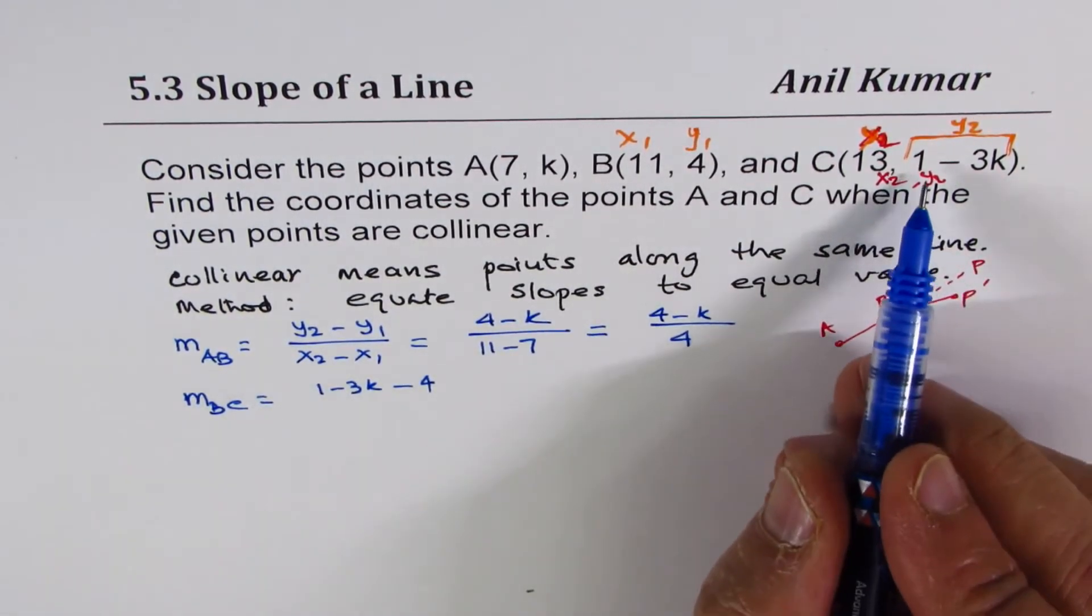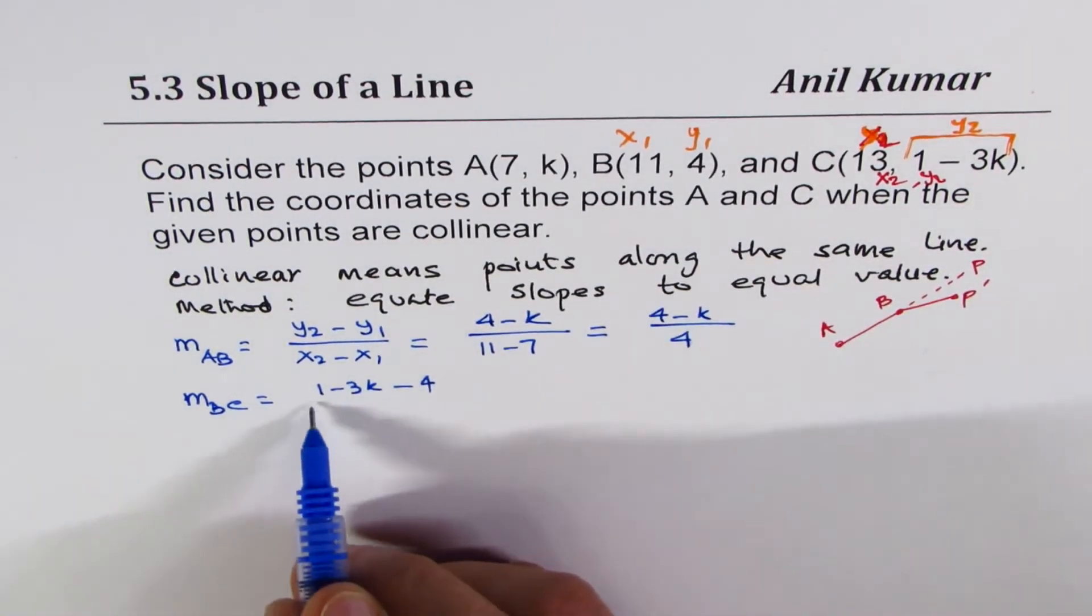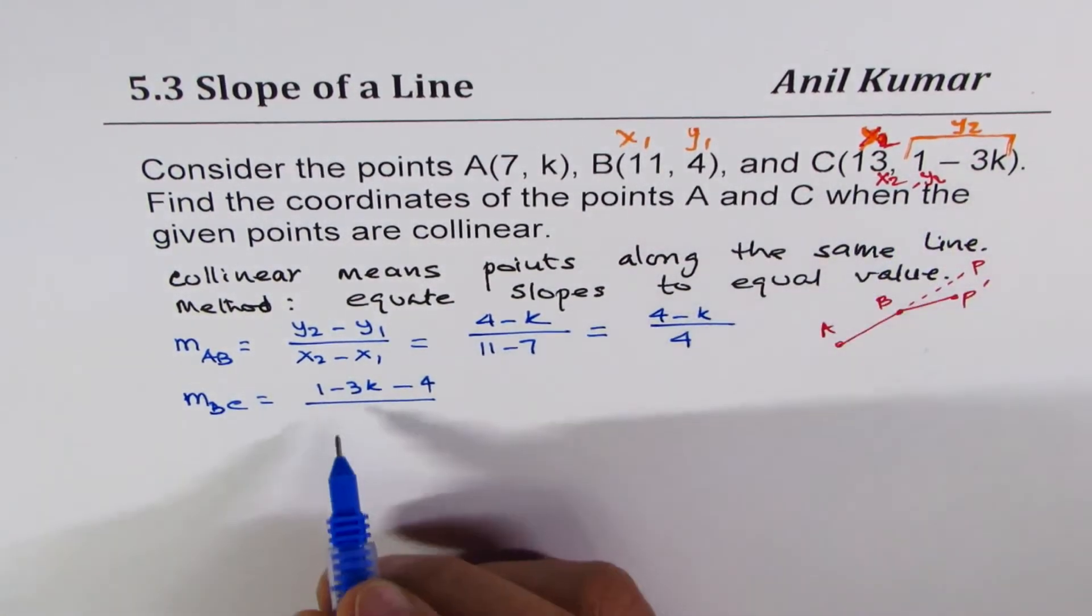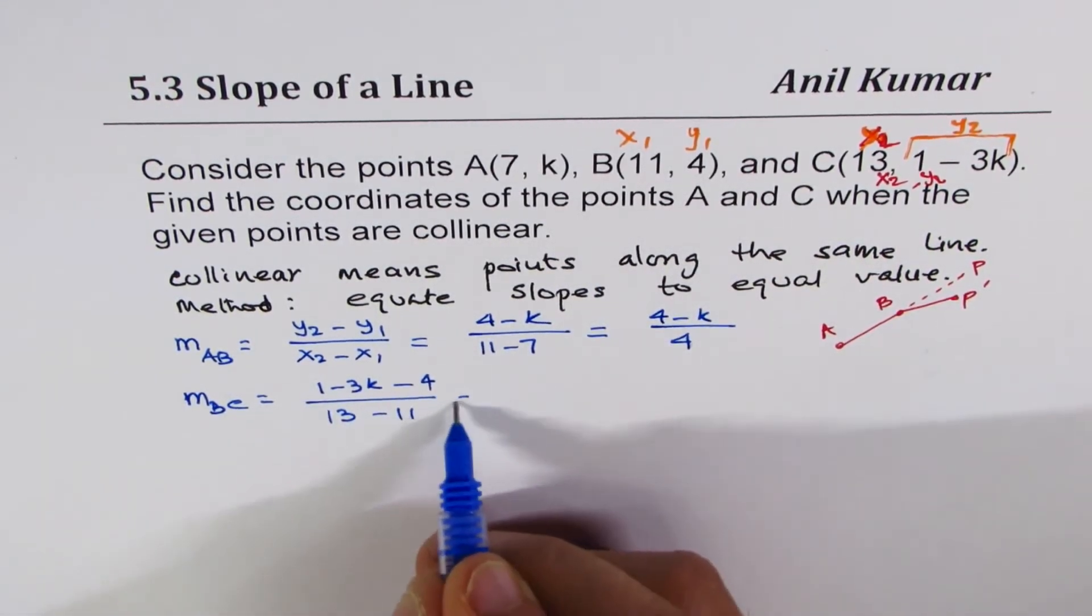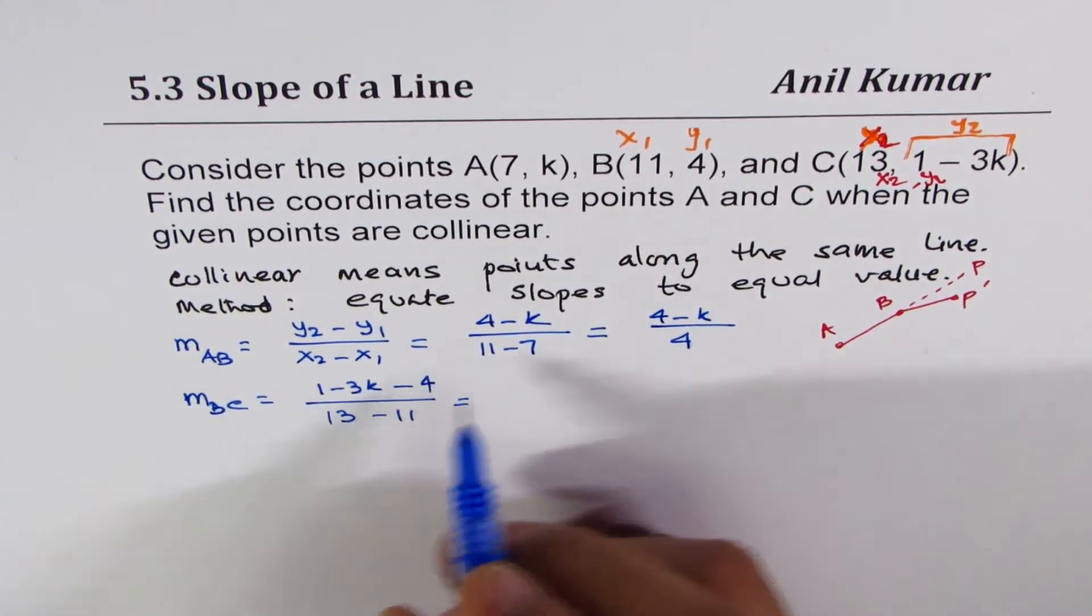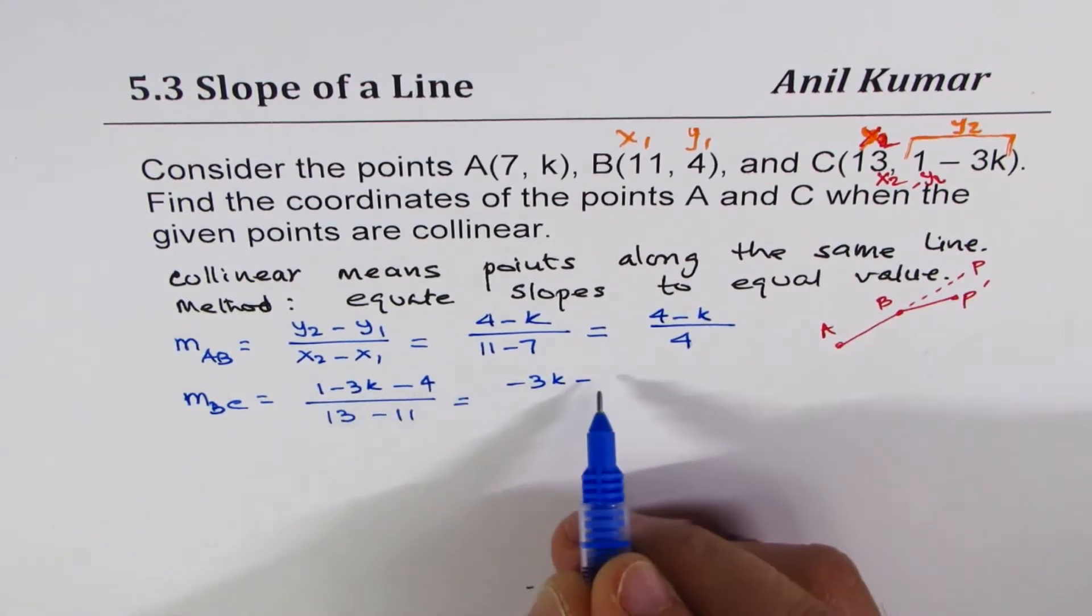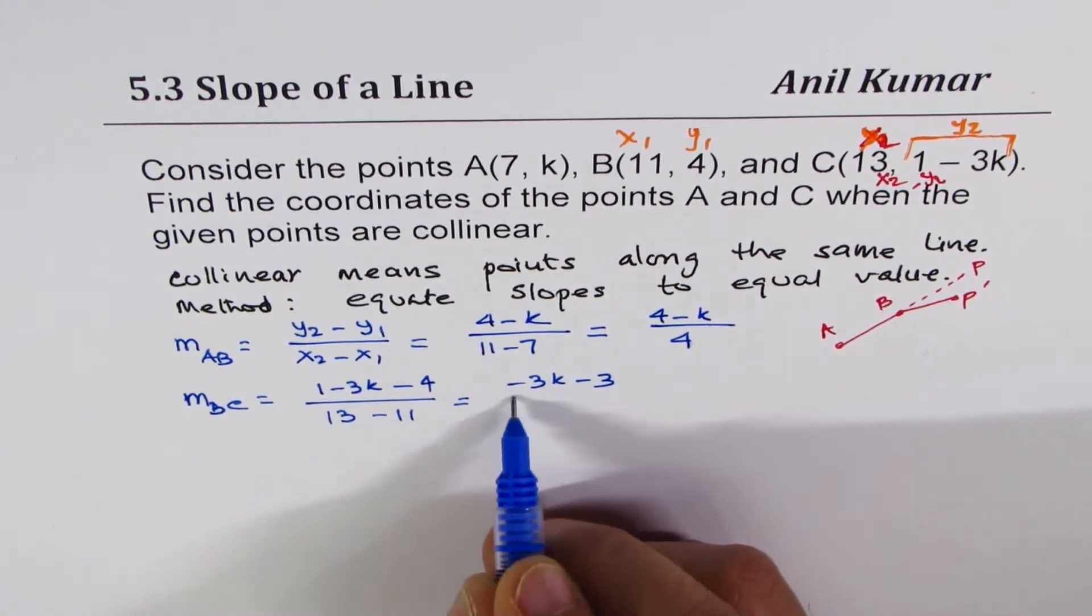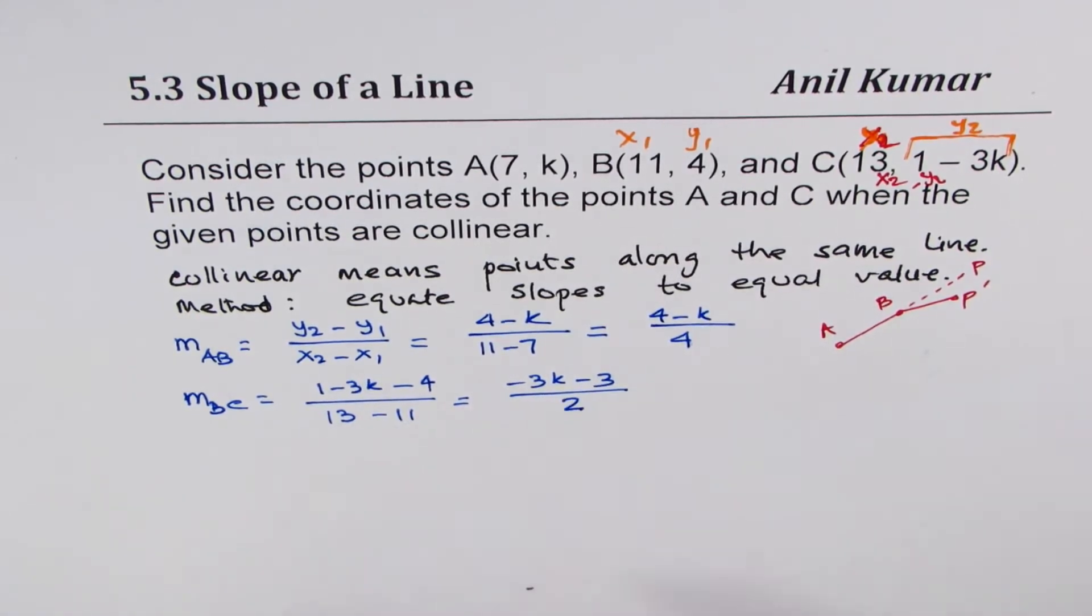So Y value is 1 minus 3K. Take away Y1, which is 4, divided by X value of 13, X1 minus 11. So minus 3K and 1 minus 4 will give us minus 3K minus 3 over 13 minus 11 is 2. So that is what you get.